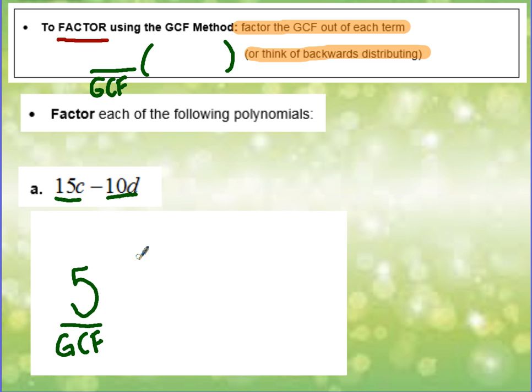And now we will make our set of parentheses. In order to figure out what goes into the set of parentheses, you need to ask yourself, 5 times what would give me back 15c? So let's see. 5 times 3 would give me 15. And then I need a c, so I'm just going to attach it to the 3.